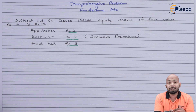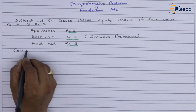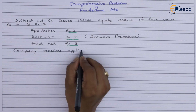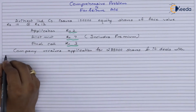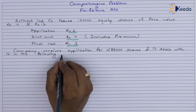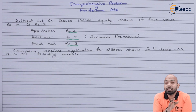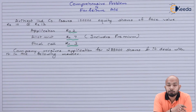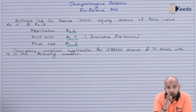Now let's figure out how oversubscription will be a part of this illustration. The company receives applications for 2 lakh 85 thousand shares — a whopping 1 lakh 85 thousand more than expected, since only 1 lakh shares were issued. How they deal with this is what has been mentioned next.